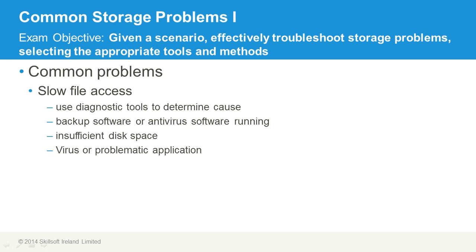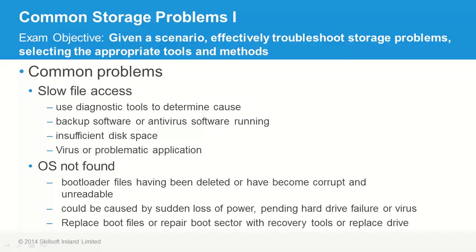There could certainly be a number of things that are causing slow file access, and it can be a challenge sometimes. If the operating system is not found, typically the bootloader files may have been deleted, or may have become corrupt or unreadable. Hard drives do experience flat-out hardware failures from time to time, and sections of the disk simply become corrupted or unreadable.